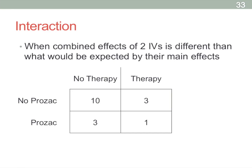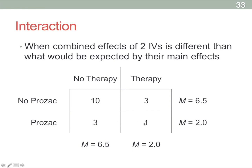A nice way to look at this is to see if the main effects of each condition differ from the between-cell effects. To get the main effect of therapy, we average across the Prozac condition. Those who received no therapy, averaged across both Prozac conditions (10 and 3), get an average depressive score of 6.5. Those who received therapy, averaging a 3 and a 2, get an average of 2.5. Similarly, those receiving no Prozac averaged 6.5, and those receiving Prozac averaged 2. The main effect of medication shows a difference of 4.5 points.